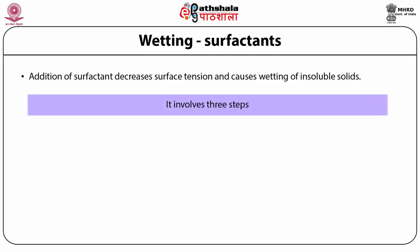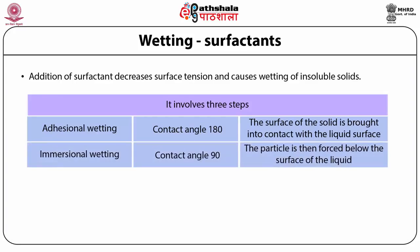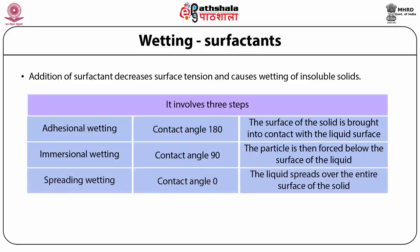Addition of surfactant decreases surface tension and causes wetting of insoluble solids. It involves three steps. The first is adhesional wetting, in which the contact angle is 180°, and the surface of the solid is brought into contact with the liquid surface. The second step is immersional wetting, in which the contact angle is around 90°, and the particles are then forced below the surface of the liquid. The last step is spreading wetting, in which the contact angle becomes zero and the liquid spreads over the entire surface of the solid.